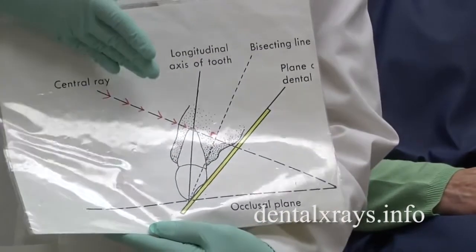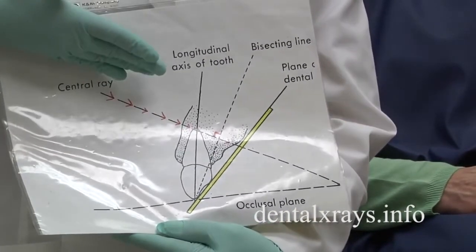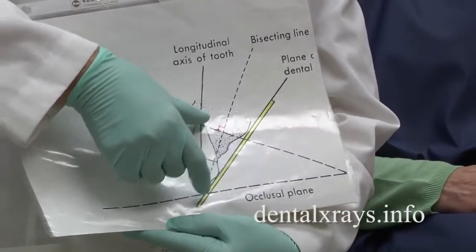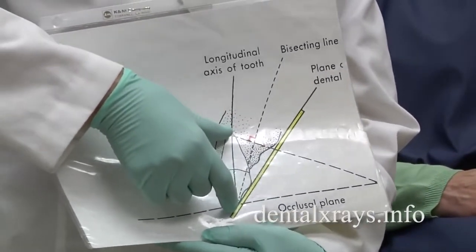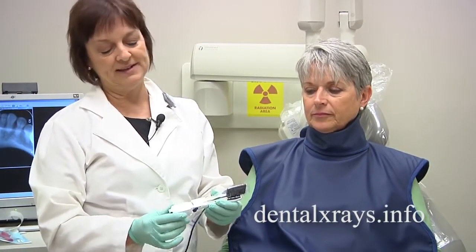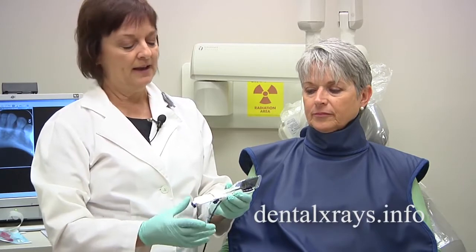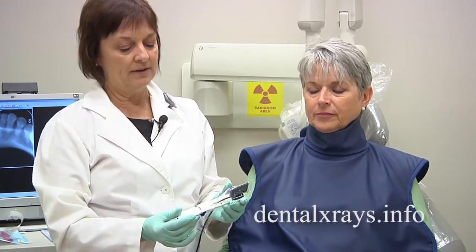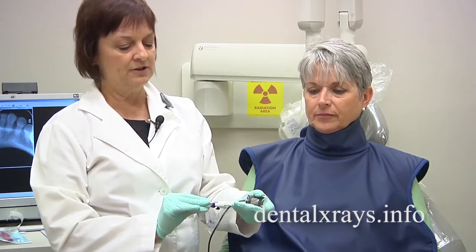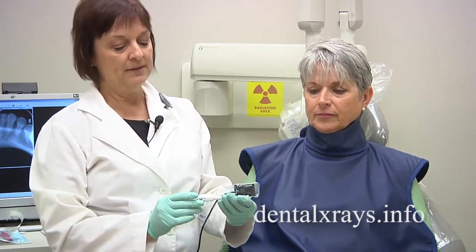So ideally what you need to do is set the vertical tube angle yourself to project the correct length of the tooth. Some offices have sensors only, and I'm going to show you how to use the sensor with bisecting angle. It's pretty much similar to using film or PSP plates, but sometimes you run into a few other problems with it.